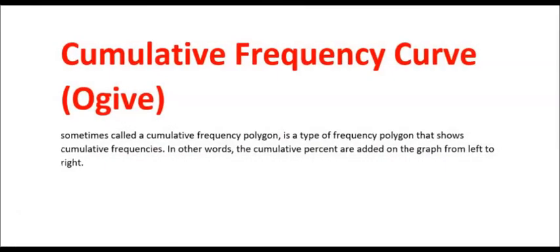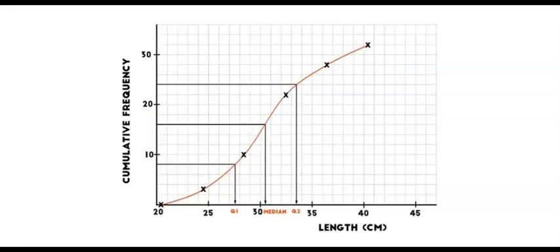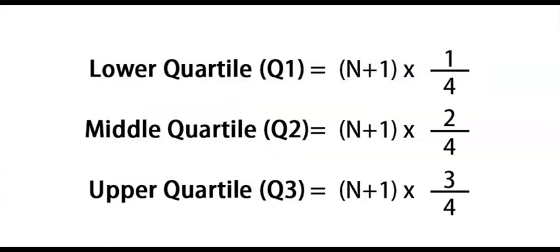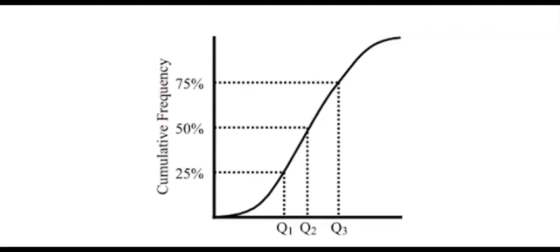A cumulative frequency curve shows cumulative frequencies; the points are joined so that the polygon looks like a long S. Quartiles divide the collected data into quarters — the middle quartile is the same as the median. For ungrouped data a formula can be used, and for grouped data it can be determined from a cumulative frequency polygon.